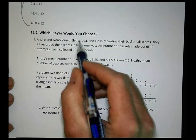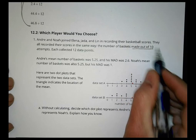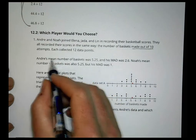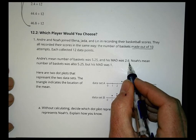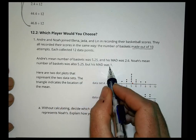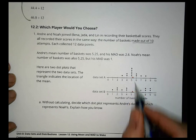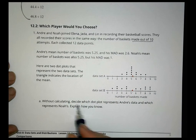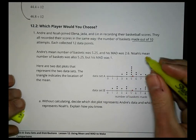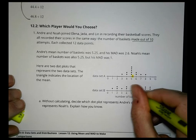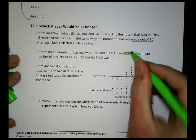Which player would you choose? Andre and Noah join Elena, Jada, and Lynn in recording their basketball scores. They all recorded their scores in the same way: the number of baskets made out of 10. Each collected 12 data points. Andre's mean number of baskets was 5.25 and his mean absolute deviation was 2.6. Noah's mean number of baskets was also 5.25, but his mean absolute deviation was 1. Here are the two dot plots that represent the data sets — the triangles indicate the location of the mean.